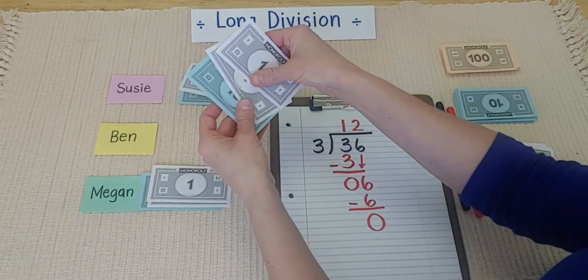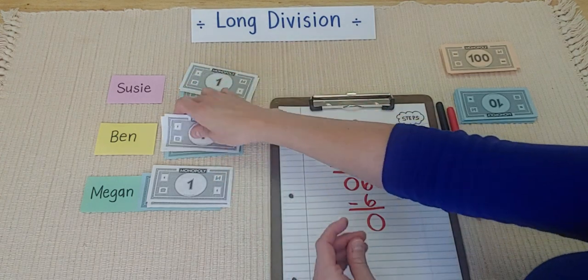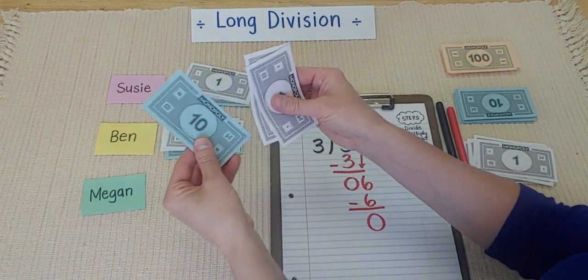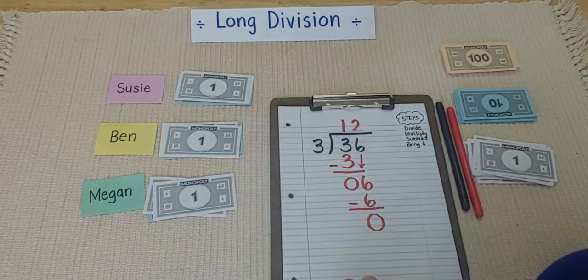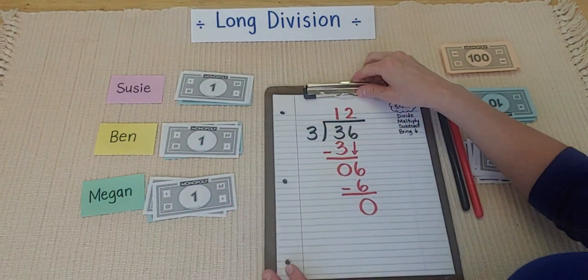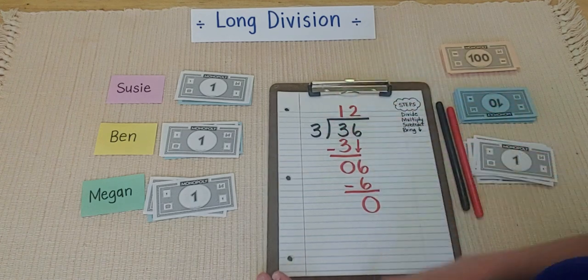Ben got 10, 11, 12. Megan got 10, 11, 12. And look at that. I was able to share all my money equally among my three friends.